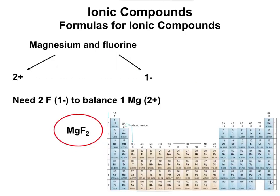Here is an example: magnesium and fluorine. Looking at the periodic table, magnesium is going to have a plus two charge. We know magnesium is plus two because of its group number two — any metal has the same charge as their group number. Alternatively, magnesium would have to lose two electrons to get the noble gas configuration, so if it loses two electrons, it's going to have a plus two charge.